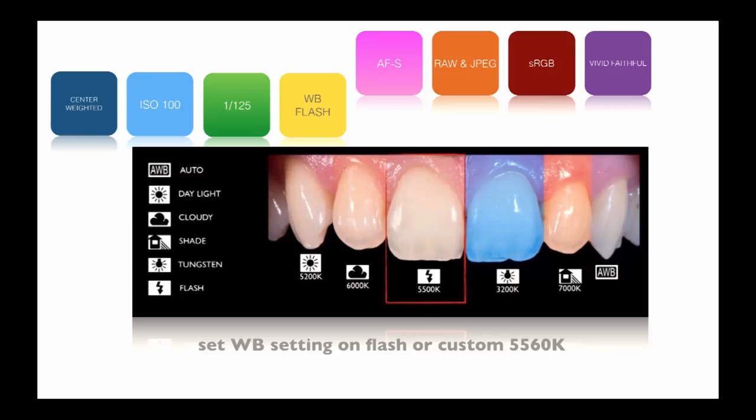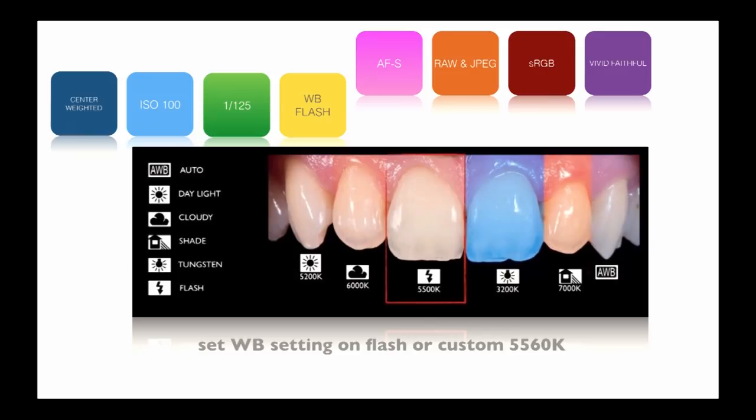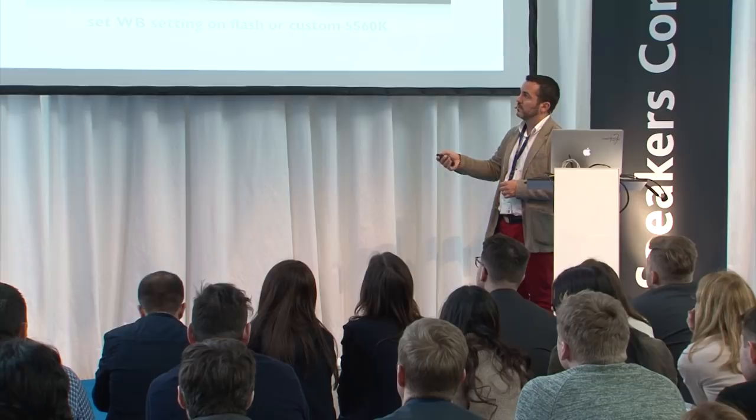In my protocol I never use continuous light — I always use 5,500 Kelvins, which is the normal daylight output from studio lights or twin flashes used in daily practice. If you use a different white balance setting, you will have blue teeth or yellow teeth and different kinds of wrong colors. You want to be as close as possible to the natural results.